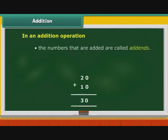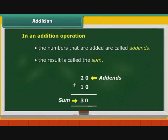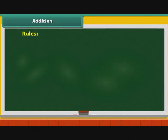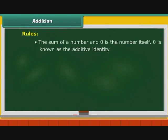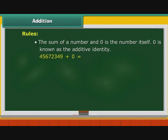In an addition operation, the numbers that are added are called addends, and the result is called the sum. Before we begin, let us understand some rules of addition. The sum of a number and 0 is the number itself. 0 is known as the additive identity. For example, 45672349 plus 0 is equal to 45672349.